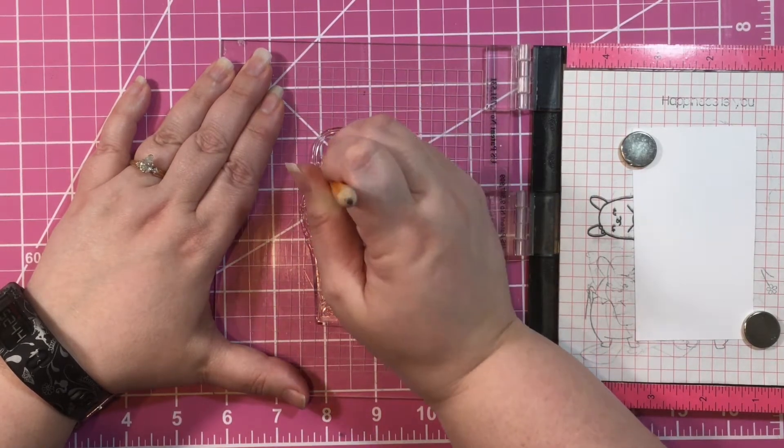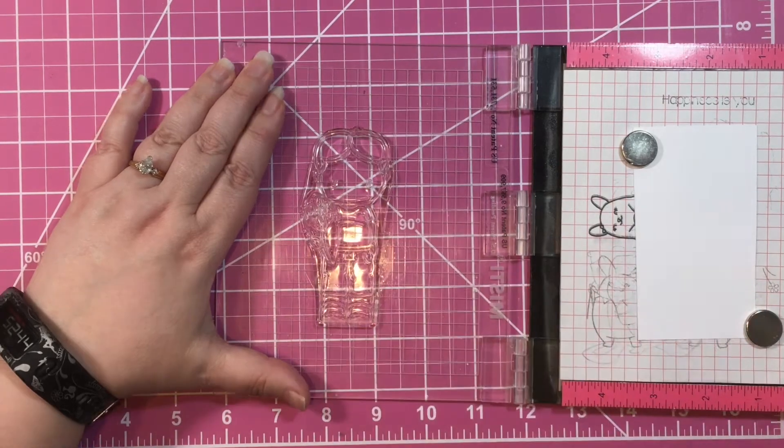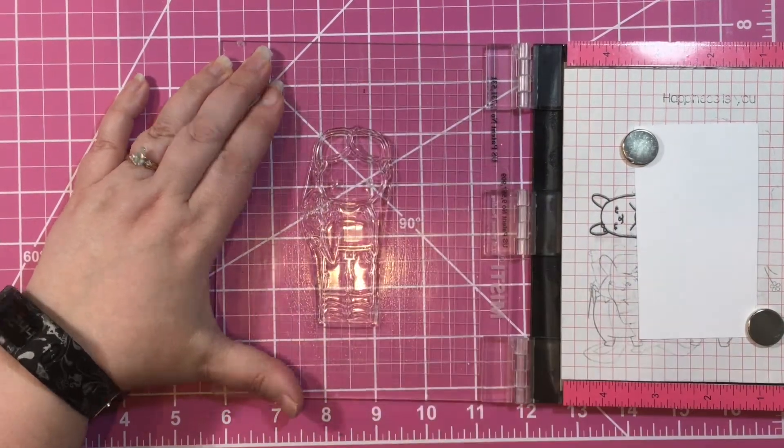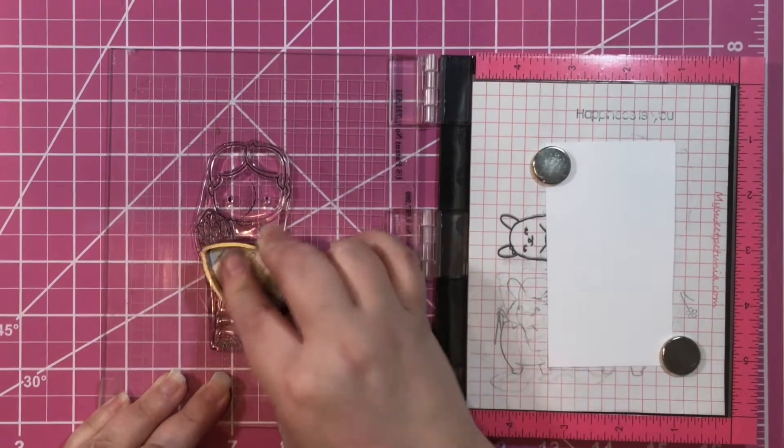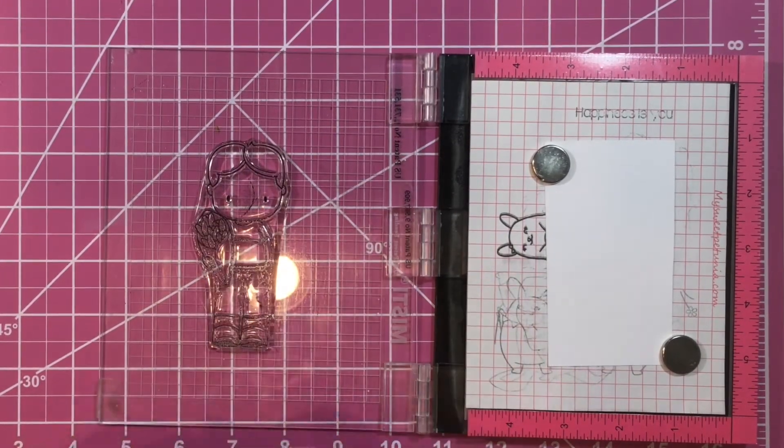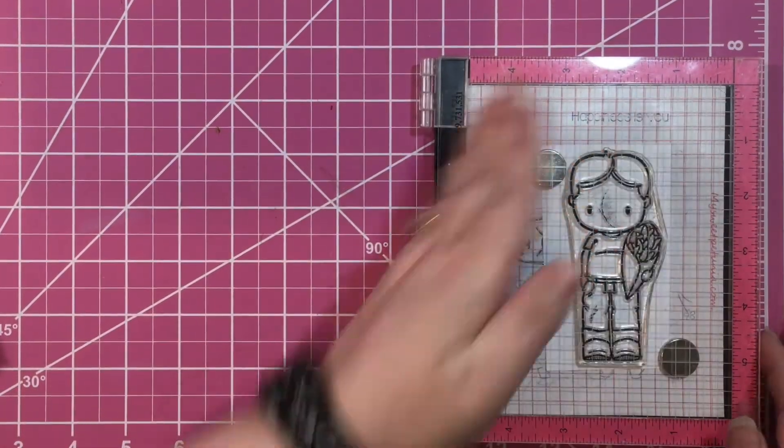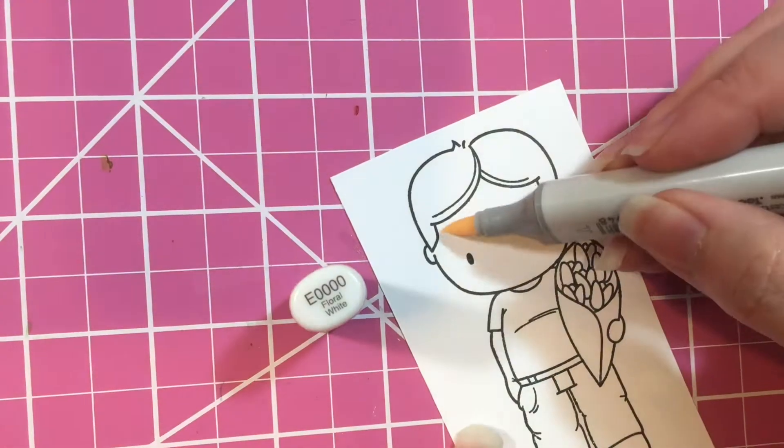I take the baby wipe again and wipe off any of the little pencil eraser pieces that might be left. Then I ink him up, again using the memento tuxedo black ink. I only had to stamp him once because he was all prepped to be used.